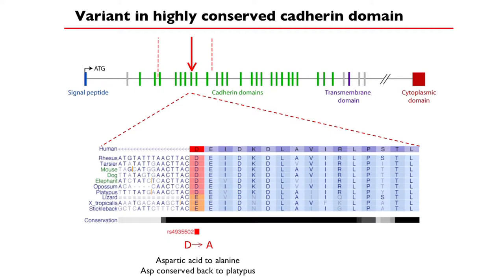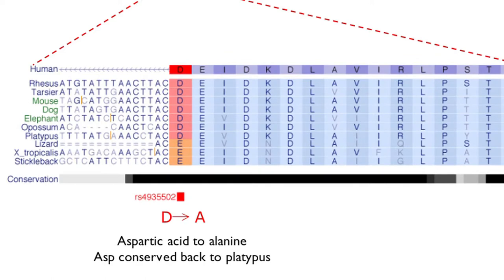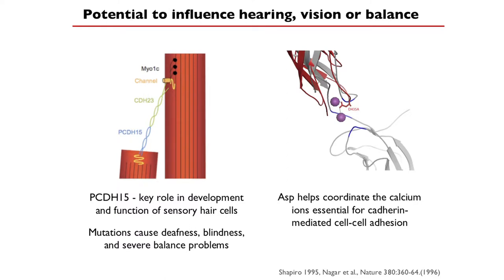Protocadherin 15 is under strong selection in Asia on chromosome 10. Mutations in this gene cause Usher syndrome, which leads to deafness, blindness, and balance problems. We looked at where the aspartic acid to alanine change lies — it's in a key cadherin domain. Interestingly, when you look across 34 sequenced mammals, in all 34 it's always aspartic acid. Looking all the way back through the entire vertebrate lineage, it is always an acid. Yet suddenly, in Asia, it's changed to alanine — a huge change that likely affects protein structure, including calcium binding in that domain.